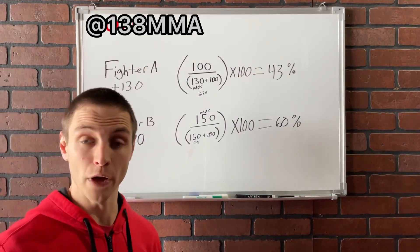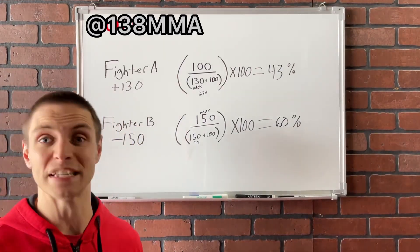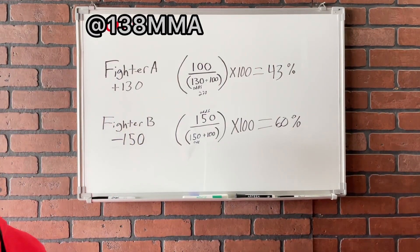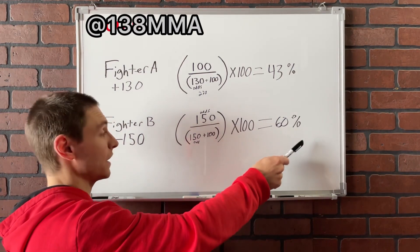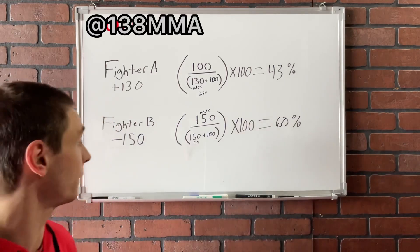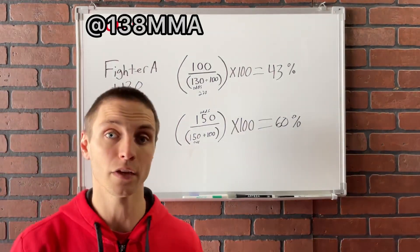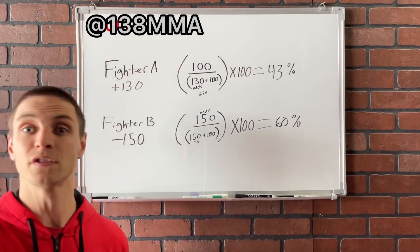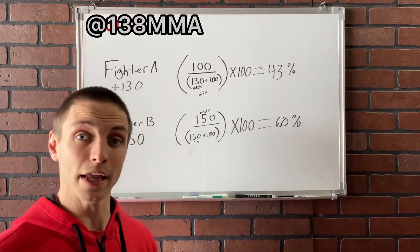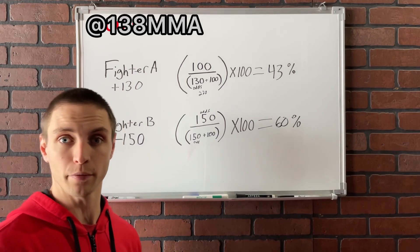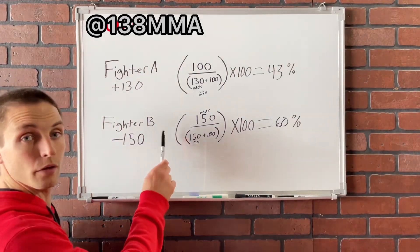Now, if you had thought that fighter B was going to win maybe 70, 75, 80% of the time, this is a great bet because they're saying that it's 60% and you're getting the odds that reflect that, the minus 150. And so if you believe it's to be 70, 80, 85, 90, like something like that, what you're going to get is some better value here on the play. So playing this would be a good option.